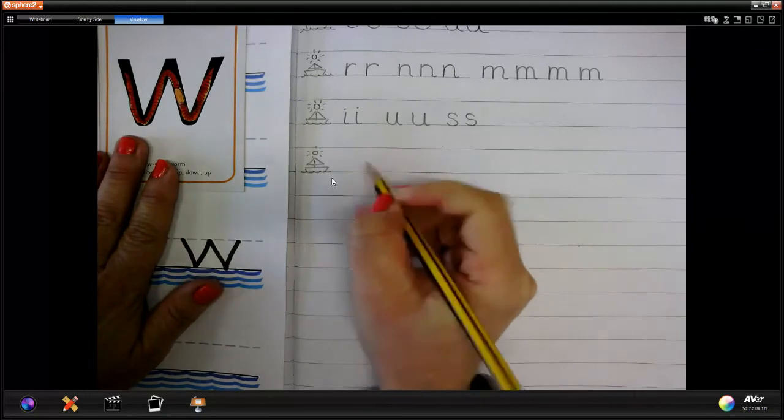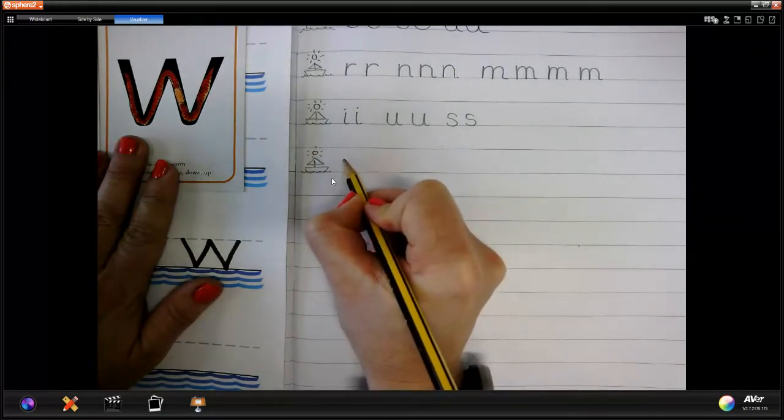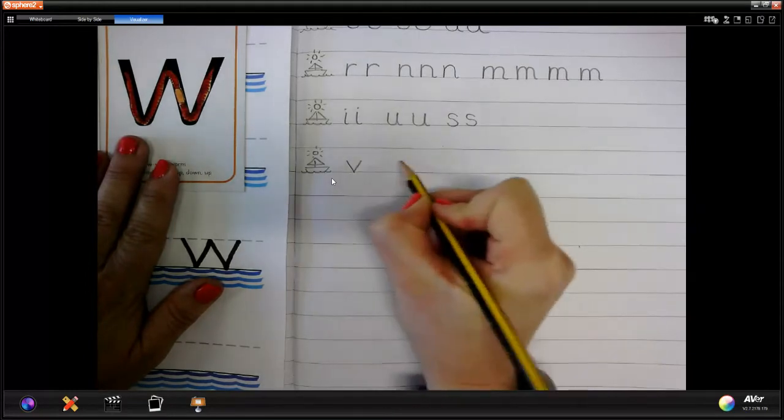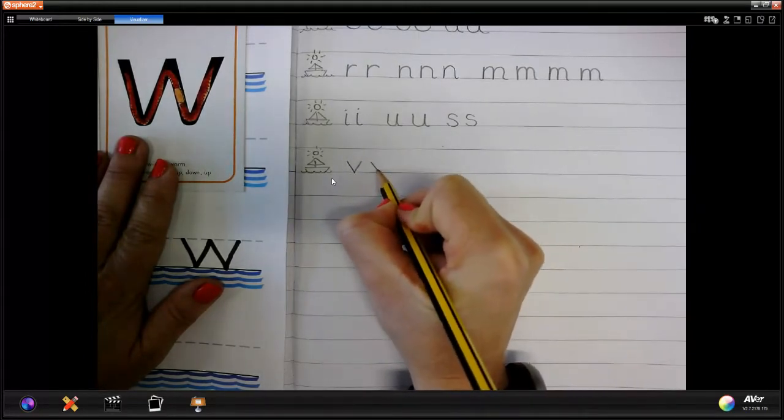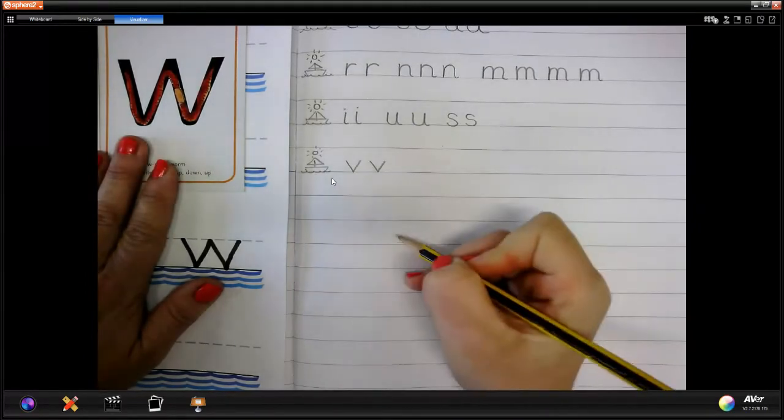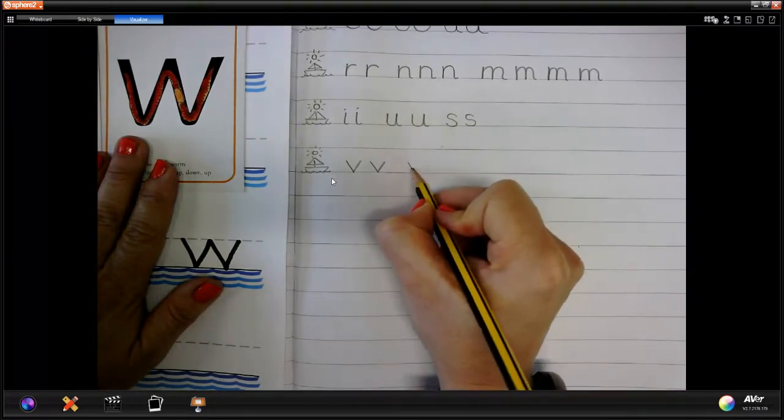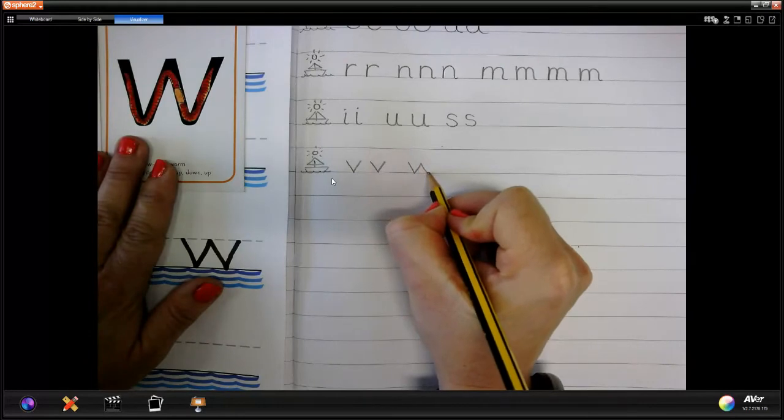Let's go down that vulture's wing and up the other one. Down one wing, up the other one. And our wiggly worm. Down, up, down, up.